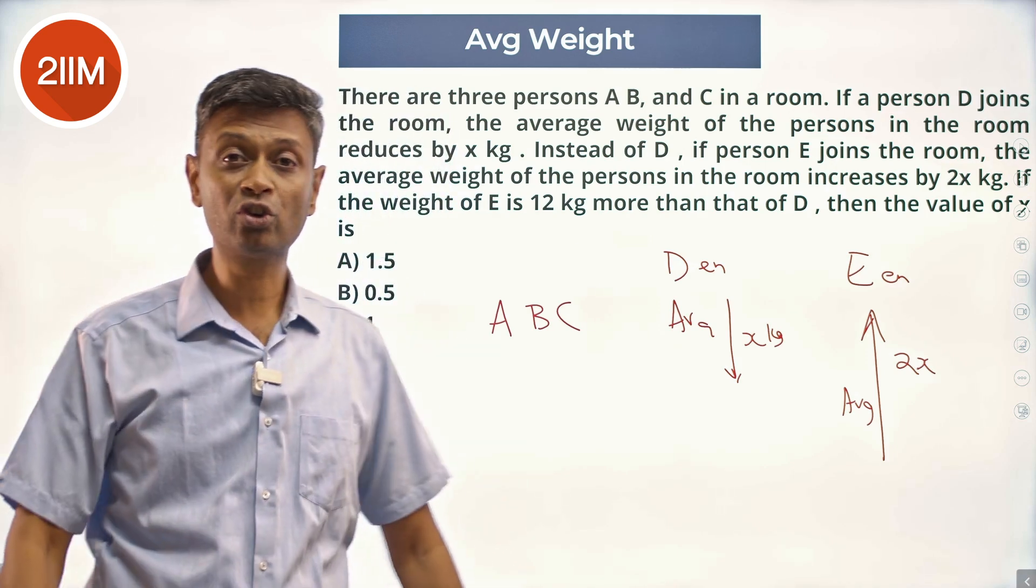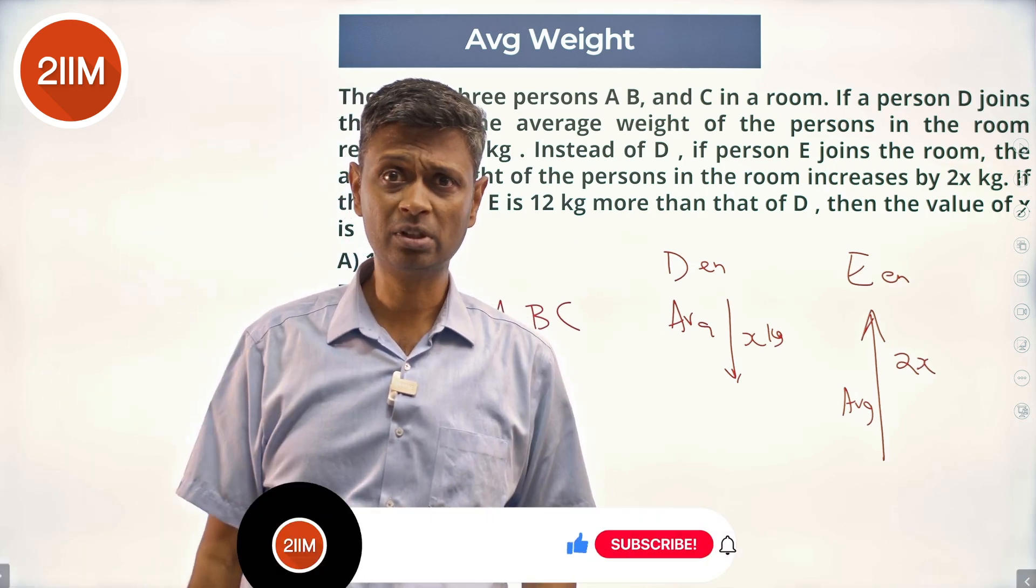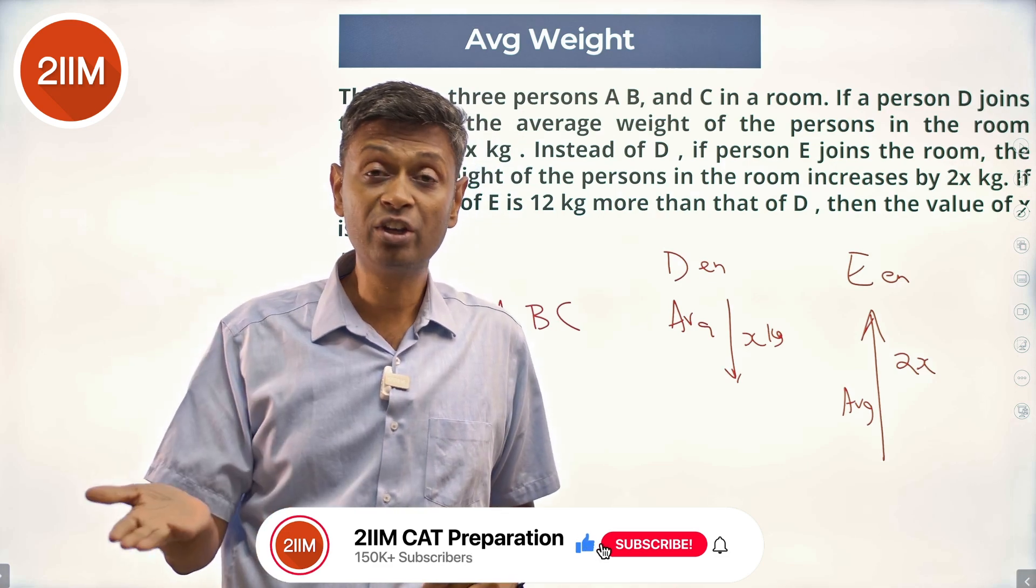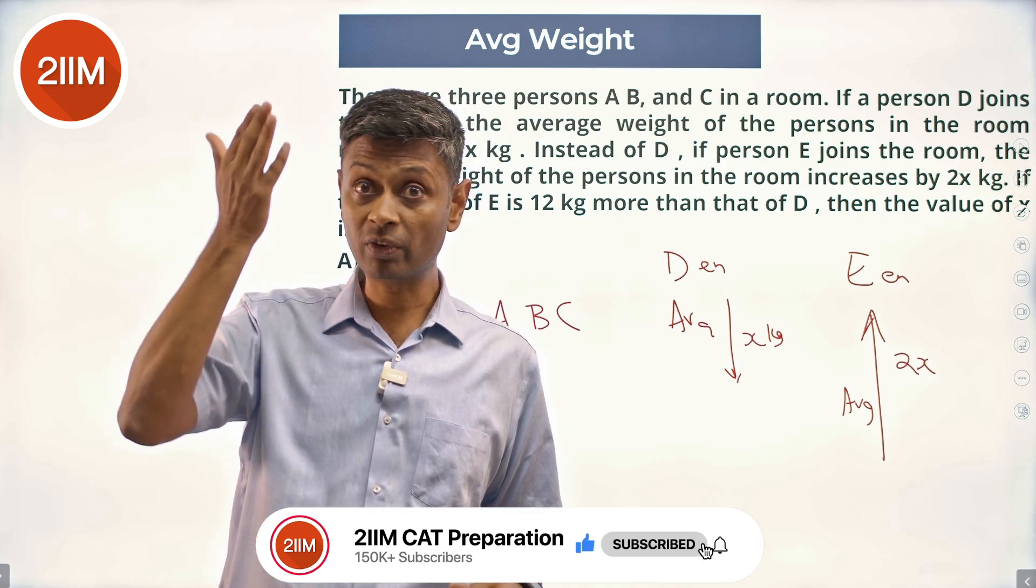So we have A, B, C, D - the average is minus x from whatever it was. A, B, C, E - the average is plus 2x from whatever it was.